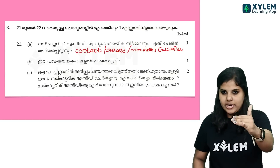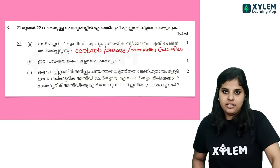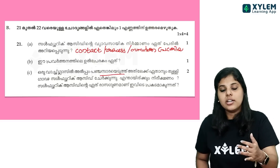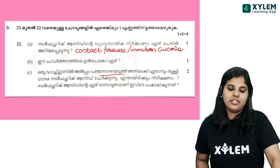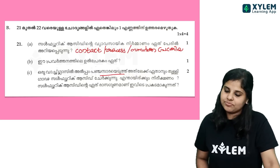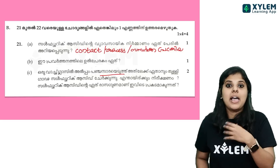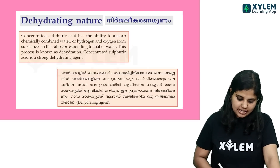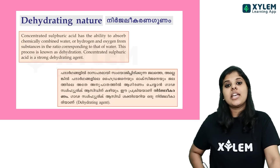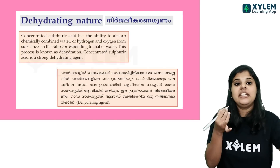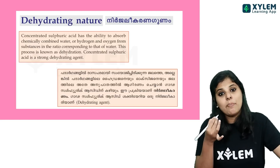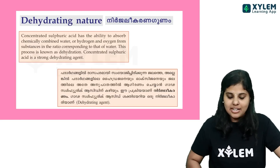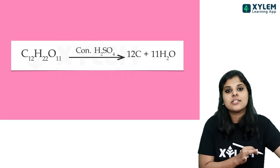Two marks. It's very important. If we add concentrated sulfuric acid to sugar in a watch glass, the observation is that the color turns black. This demonstrates the dehydrating nature of sulfuric acid. Sugar contains carbon, hydrogen, and oxygen.